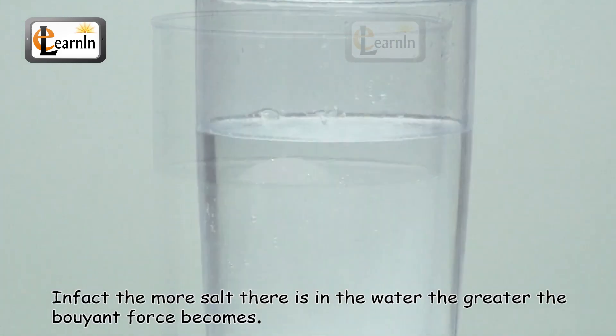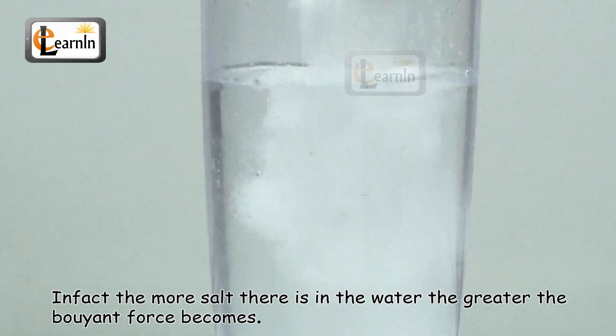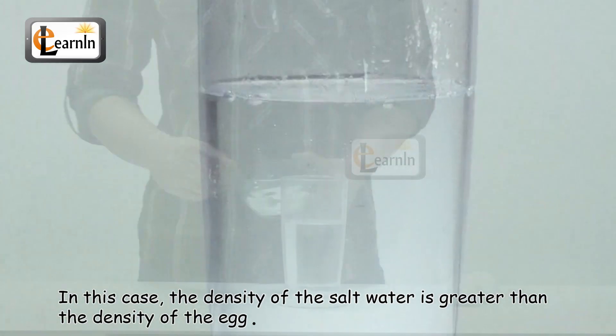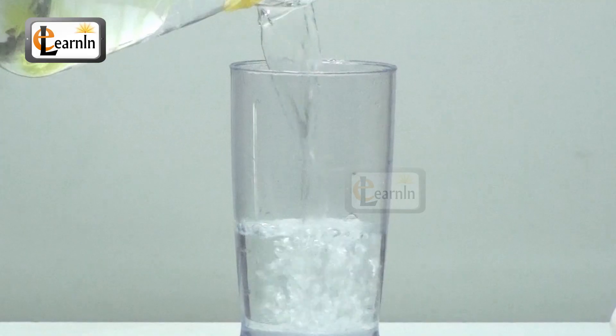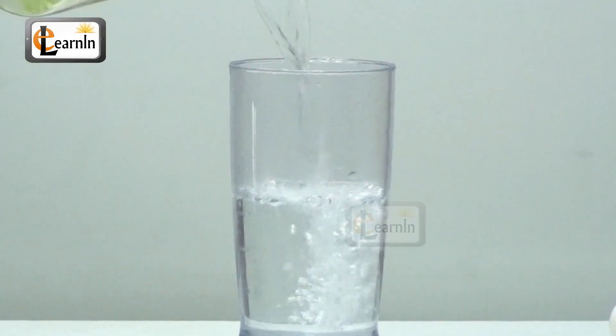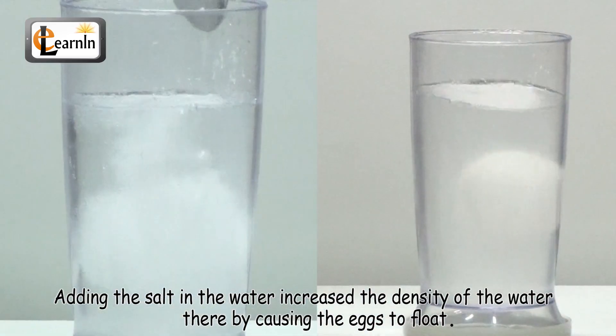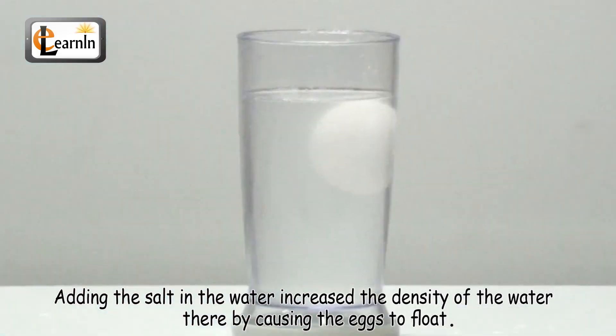In fact, the more salt there is in the water, the greater the buoyant force becomes. In this case, the density of the salt water is greater than the density of the egg. Adding salt in the water increases the density of the water, thereby causing the eggs to float.